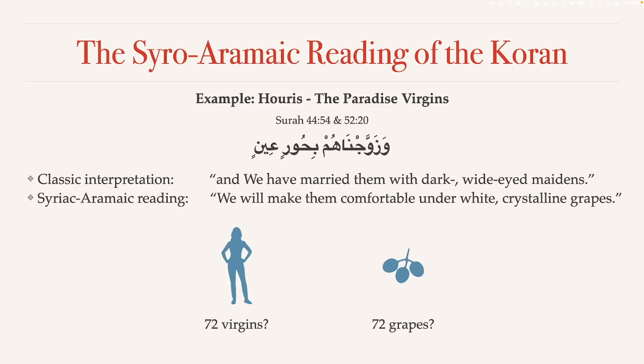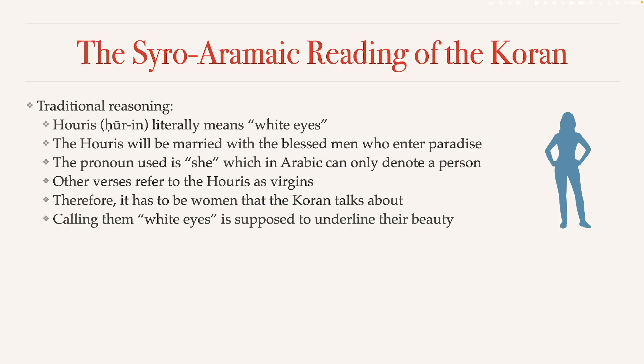Christoph Luxenberg says this is wrong, and that the text really says: 'We will make them comfortable under white crystalline grapes.' So the question is: are we looking at 72 virgins or 72 grapes? Muslims today say that Hurin — the proper term — literally means 'white eyes' in Arabic. Hur means whites and in means eyes. These words have a feminine ending and are plural, fitting a description of women.